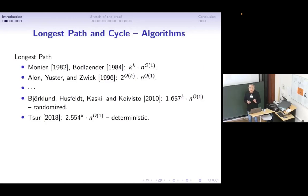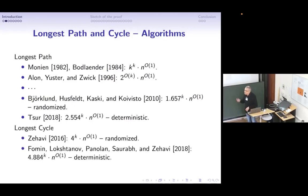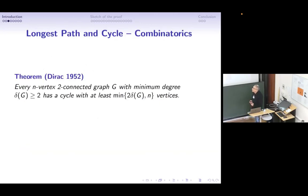There are many interesting and nice techniques that were introduced: algebraic techniques, color coding, and so on. These are results about paths, and in parallel the results were obtained for the longest cycle. Besides algorithmic results, there are many very interesting combinatorial results in extremal combinatorics. Maybe the first one that you all know from your basic courses is the result obtained by Dirac back in 1952.